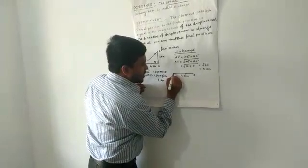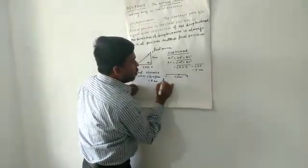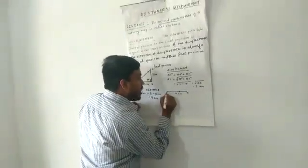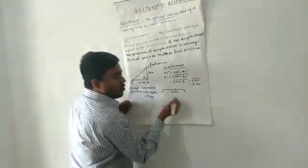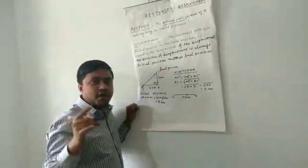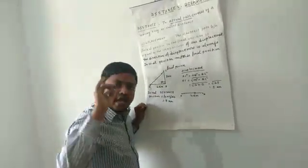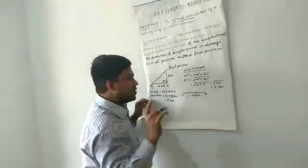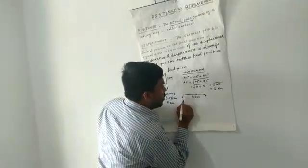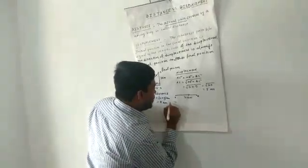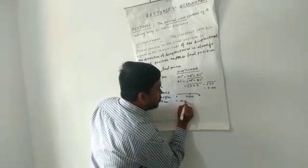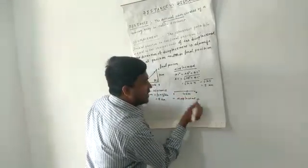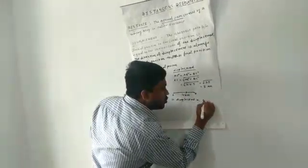Suppose this is station A and this is station B. A train starts its journey from point A, then goes to point B, and again comes back to station A. So the value of displacement will be zero, because the initial position and final position coincide with each other. So the value of displacement will be zero. But the distance equals 4 plus 4 kilometers, since the particle comes back to the same position — displacement will be zero.